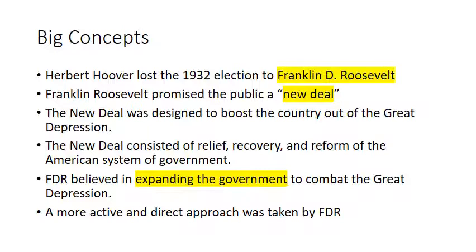Franklin Roosevelt's rhetoric helps him get elected, and so in 1933, Roosevelt begins experimenting with various programs and efforts to help boost the country out of the Great Depression. The New Deal consisted of three avenues: programs designed to provide relief to the American people, programs designed to help the economy recover, and programs to help reform some of the institutions that could not perform effectively because of or helped cause the Great Depression.